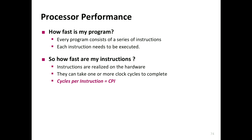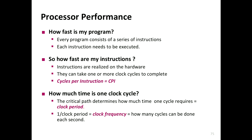Sometimes instructions can take more than one cycle, but for single-cycle architecture the cycles per instruction (CPI) is always one. When you go to multi-cycle and pipelining you'll see how this changes. One clock cycle's duration is determined by the critical path — the time for the instruction to actually execute.